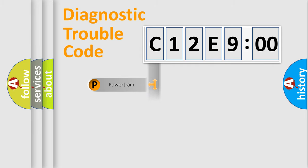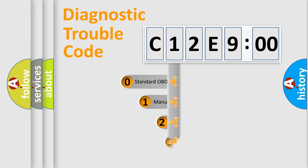Powertrain, Body, Chassis, Network. This distribution is defined in the first character code.